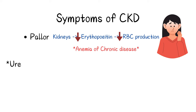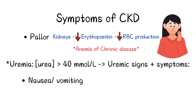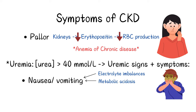CKD leads to uremia as a result of the kidney's diminished ability to filter and excrete waste products from the blood. When the serum concentration of urea exceeds 40 mmol per litre, it can lead to a range of signs and symptoms which we call uremic signs and symptoms. Uremic toxins can irritate the GI tract and cause nausea and vomiting. This is not the only cause — other factors like electrolyte imbalances and metabolic acidosis can also lead to nausea and vomiting.